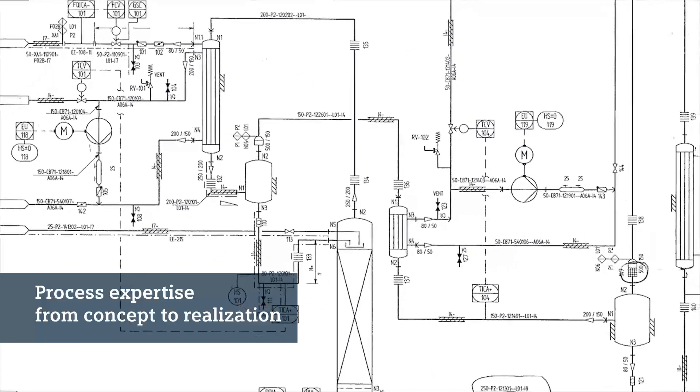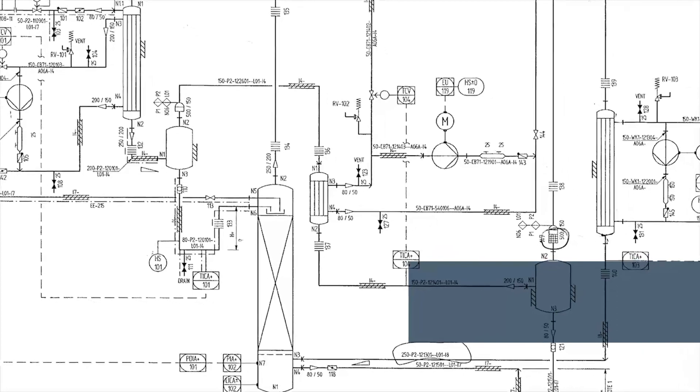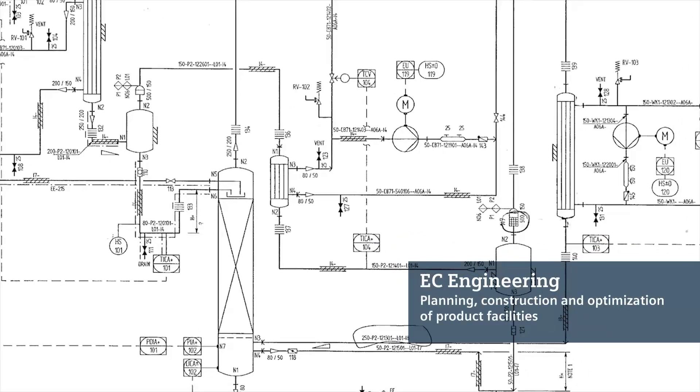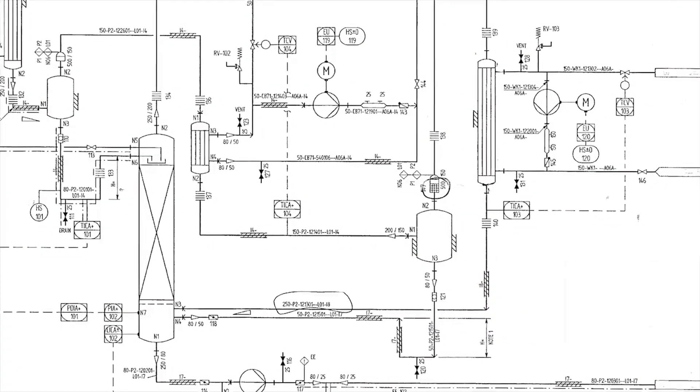The first service element is Integrated Engineering. This comprises planning of production plants, from the initial study to the commissioning stage, as well as optimizing in brownfield.